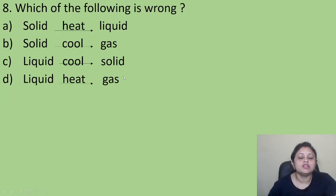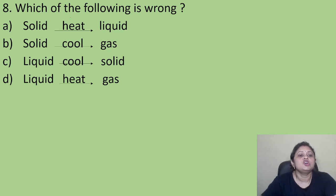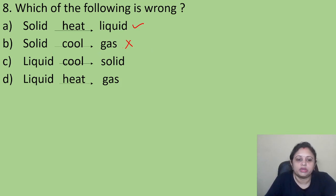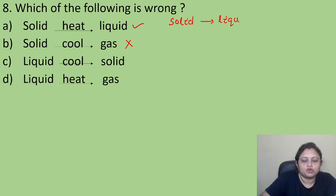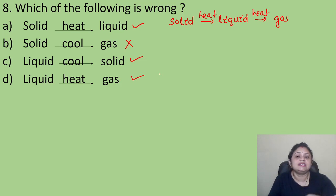Coming to the next question: which of the following is wrong? Option A: solid when heated gives liquid. Option B: solid when cooled gives gas. Option C: liquid when cooled gives solid. Option D: liquid when heated gives gas. Solid when heated gives liquid — correct. Solid on cooling gives gas — that is wrong. When we heat, solid is converted to liquid, and on further heating it is converted to gaseous state. Liquid when cooled gives solid — correct. Liquid when heated gives gas — also correct. So the correct answer is Option B.